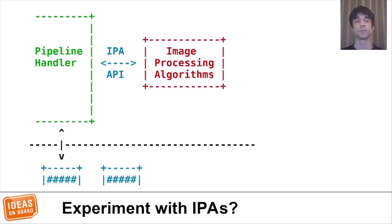One more thing: there are specific interfaces for communication between the IPA and the pipeline handler, which are specifically designed for each platform. One purpose was to restrict system access to the IPA modules, but another is to make it easier to develop, experiment, adjust, or control IPAs. If you're the type of person that likes to make compilers in their free time, perhaps this would be a fun side project.